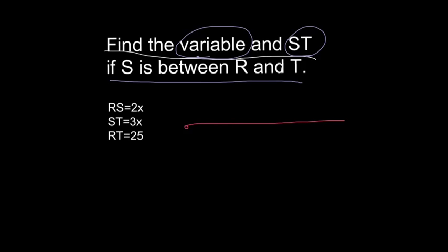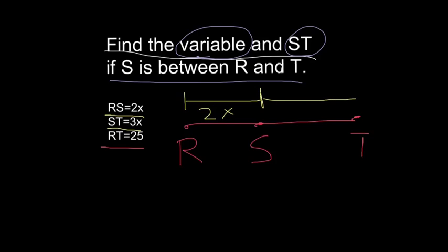They're telling me S is between R and T. So I know I've got a line here. I know I've got R, I know I have a point T, and I know S is somewhere between them. Now we also have some more information over here on the left. Let's see. They're saying RS equals 2X. So we know this distance between R and S is going to be equal to 2X. We also know that ST, that's this distance here, S to T, is equal to 3X. They're also telling us that RT, here's R all the way to T over here, is equal to 25.